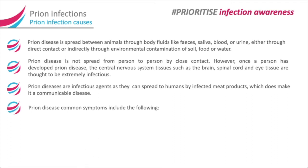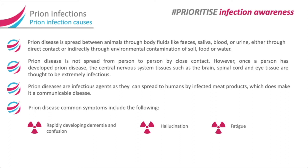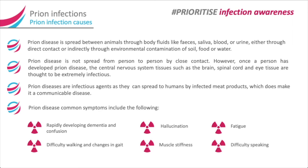Prion disease common symptoms include the following: rapidly developing dementia and confusion, hallucination, fatigue, difficulty walking and changes in gait, muscle stiffness, and difficulty speaking.